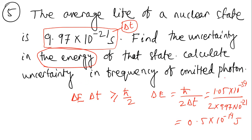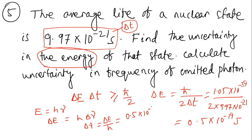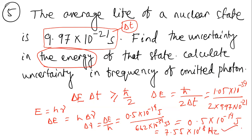Next, to find the uncertainty in frequency of emitted photons: since E = hν, we have ΔE = h·Δν, so Δν = ΔE/h = 0.5 × 10⁻¹⁴ / 6.626 × 10⁻³⁴, which gives approximately 7.55 × 10¹⁸ Hz (s⁻¹). Thank you for watching.